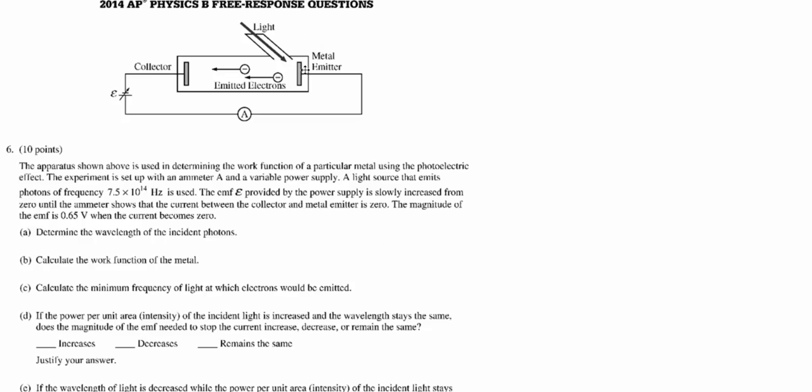It is going to eject electrons. We have a battery here that we are going to connect to this plate to slow the electrons down, eventually trying to figure out how much voltage is required to stop the electrons. Therefore, once we hit that 0.65 volts, the photoelectric emission becomes zero.